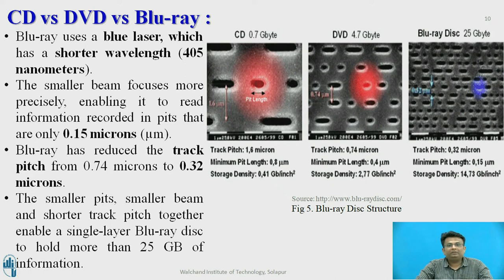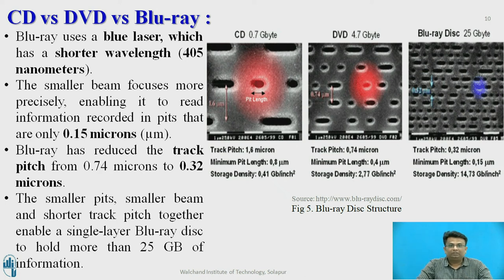The Blu-ray uses a blue laser with a shorter wavelength of 405 nanometers, which is why it can hold more information compared to DVD and CD. Blu-ray has reduced the track pitch from 0.74 micrometers to 0.32 micrometers. The smaller pits, smaller beam, and shorter track together enable a single layer Blu-ray disc to hold 25 GB of information.